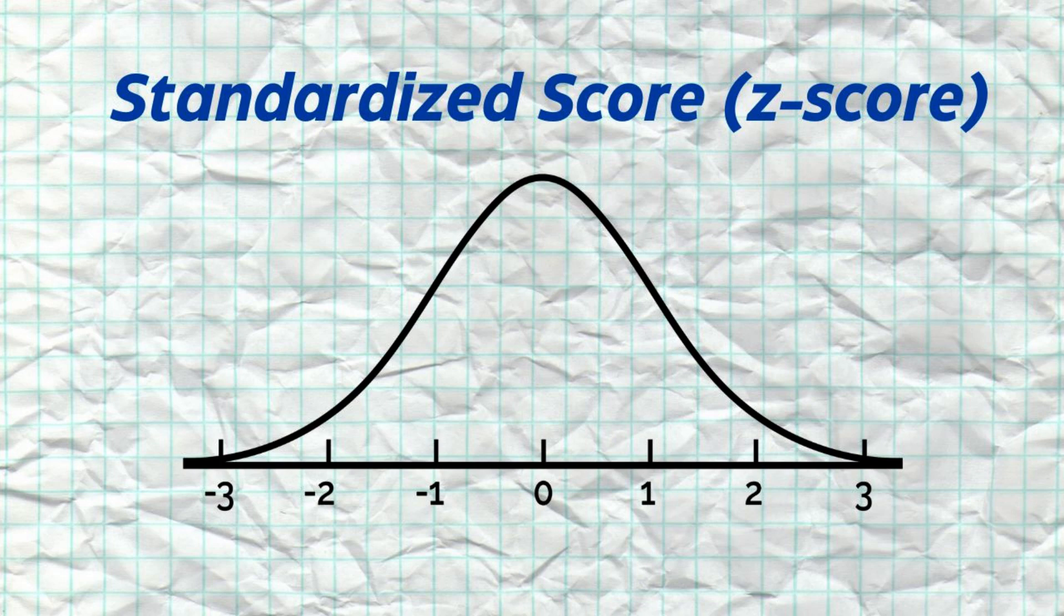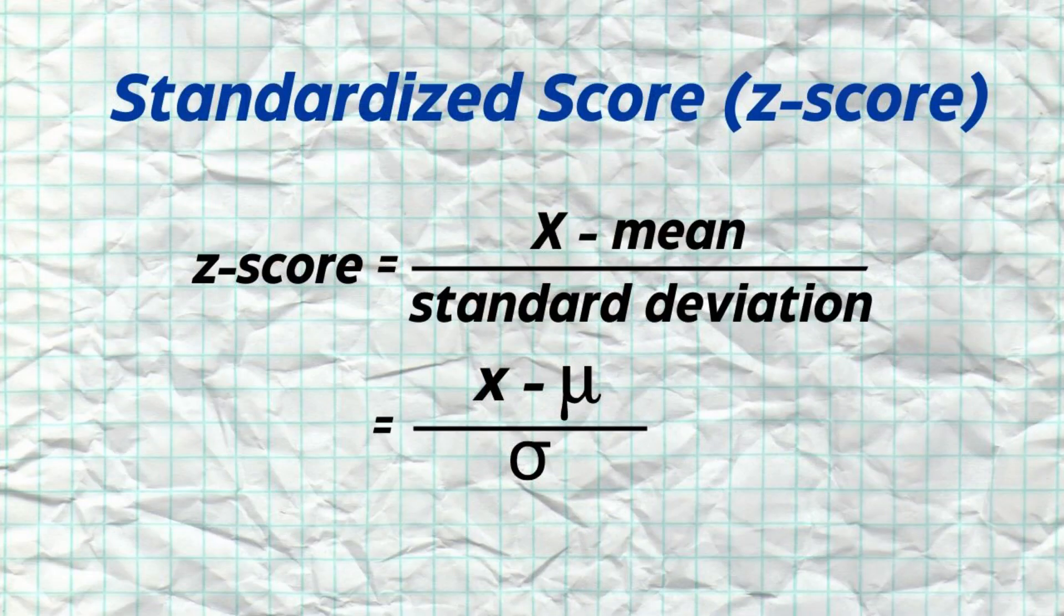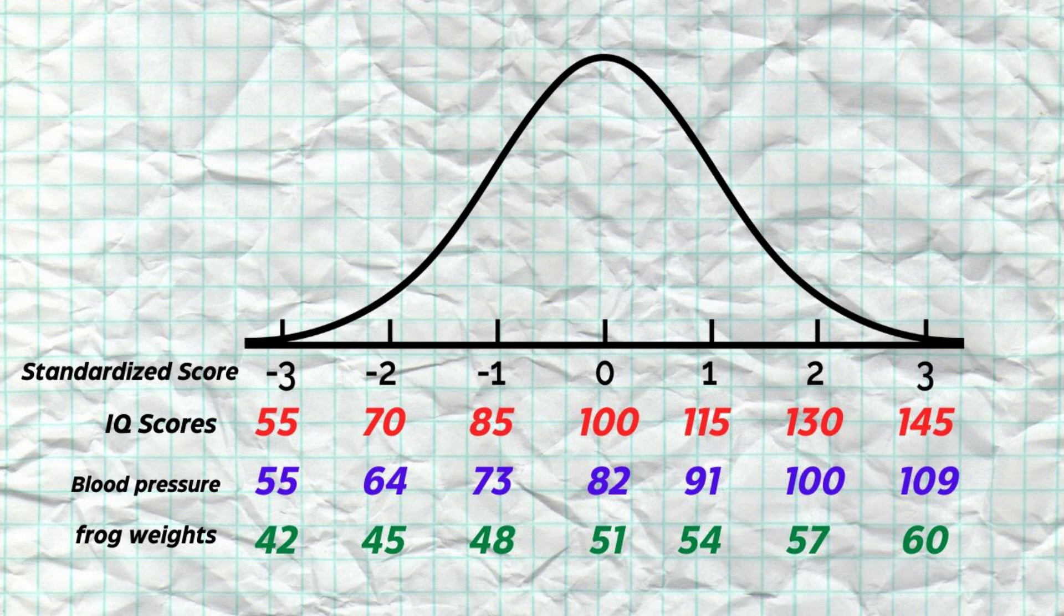To convert an observation's value to a standardized score, it's a really simple formula. We abbreviate this with what's called a z-score because it's a standardized score. To calculate a z-score for an observation, it's really simple. All you have to do is subtract the mean from the observation and then divide that by the standard deviation. Z-scores have no units. They simply tell you how many standard deviations a value is above or below the mean. Finding the z-score for values allows us to compare the seemingly uncomparable. For example, a frog with the weight of 57 grams is equivalent to a human being having an IQ of 130 or a man with a diastolic blood pressure of 100.